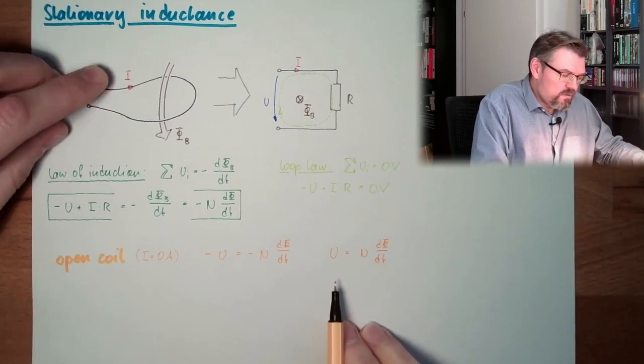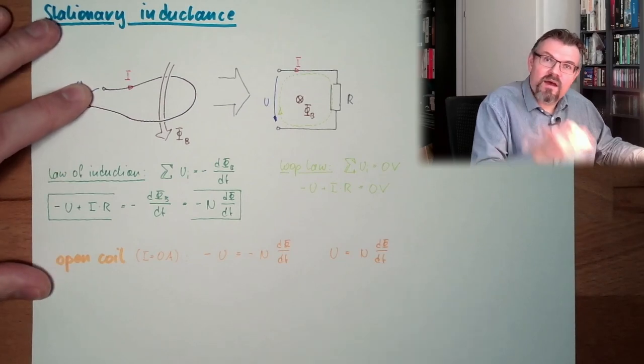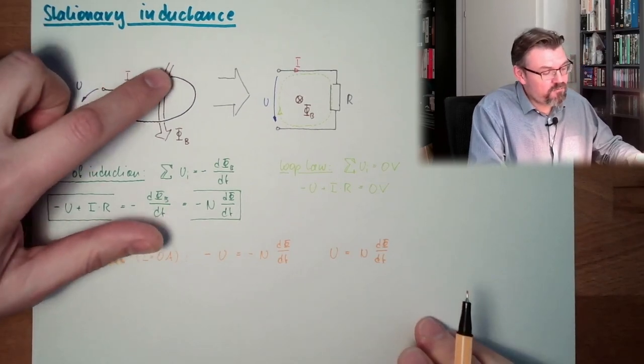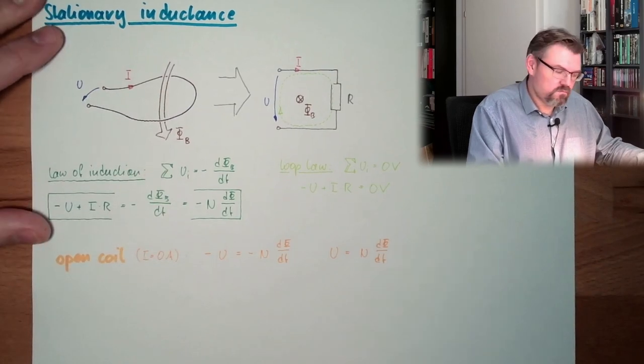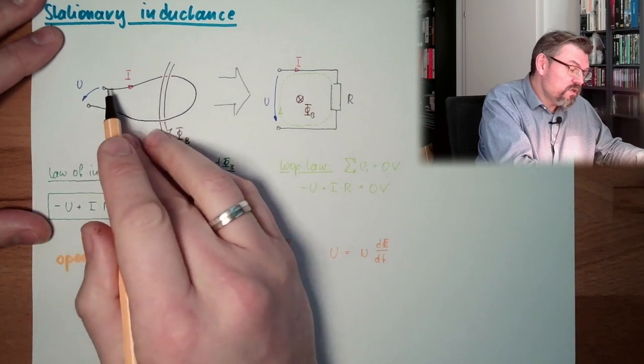So my u equals n dv dt. My voltage here equals n times the change rate. If I have n windings, n times the change rate of my magnetic flux. Right hand orientation, like I said, voltage is positive.